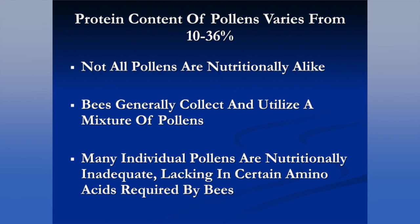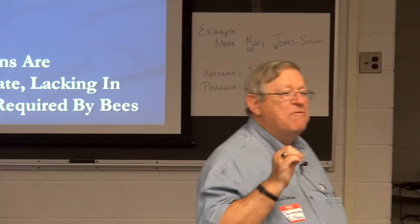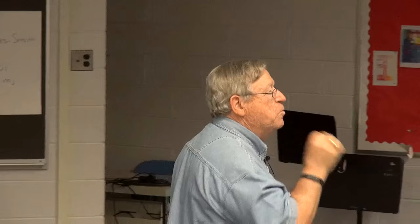What you need to realize is that all pollens are not nutritionally alike. The protein content of pollens can vary anywhere from 10 to 36 percent. Bees generally collect and utilize a variety of pollens, which is extremely important. For example, dandelion pollen lacks two essential amino acids, so if a colony were fed nothing but dandelion pollen with no access to any other protein source, reproduction would fail. This buffet of different types of pollens is extremely important in the development and reproduction of a colony.